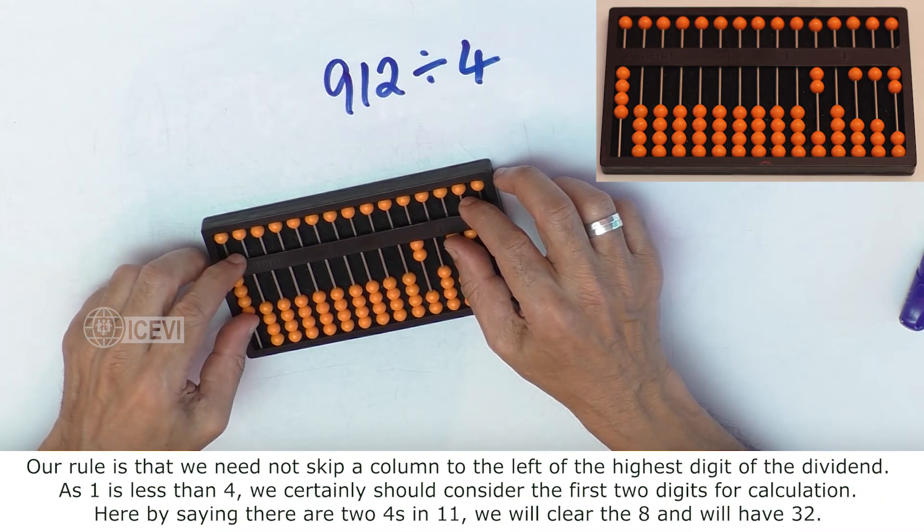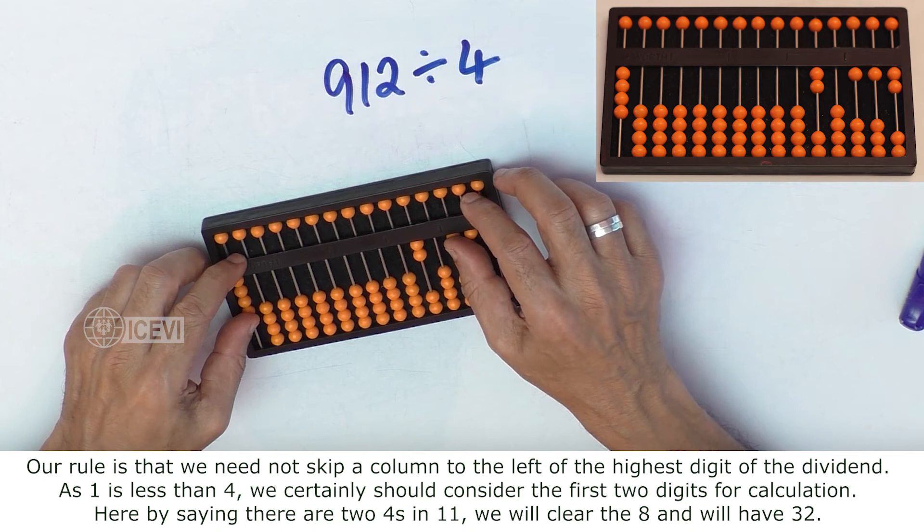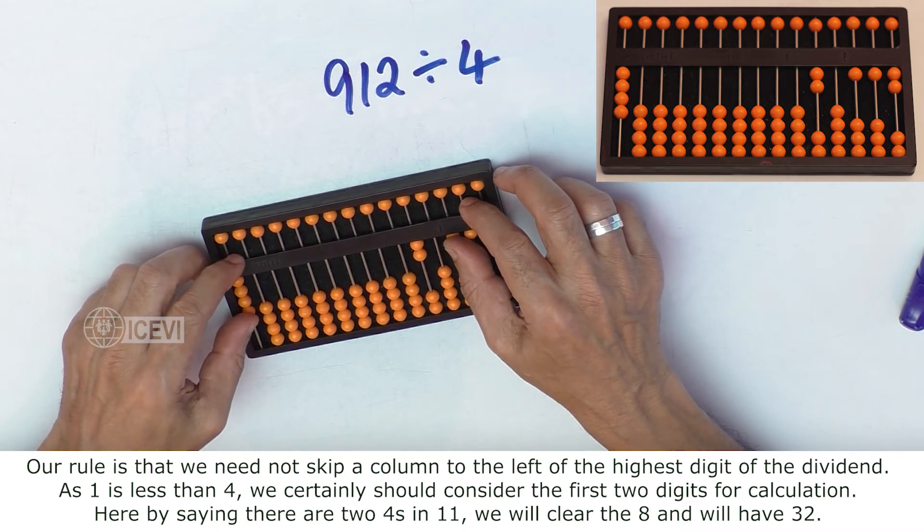Our rule is that we need not skip a column to the left of the highest digit of the dividend if the divisor is greater than that. As 1 is less than 4, we certainly should consider the first 2 digits for calculation.